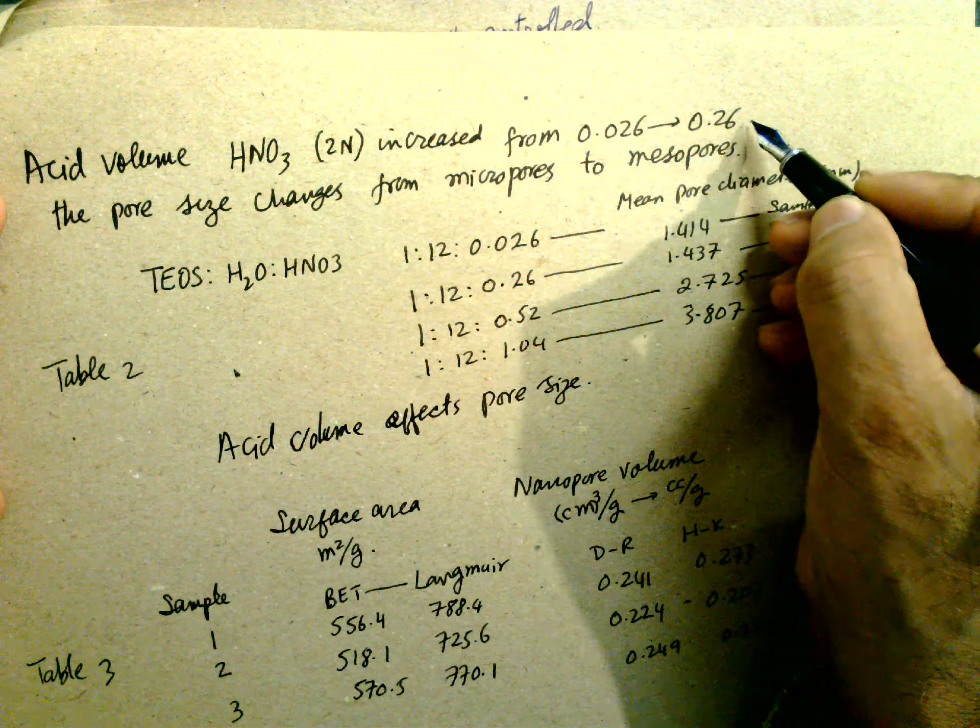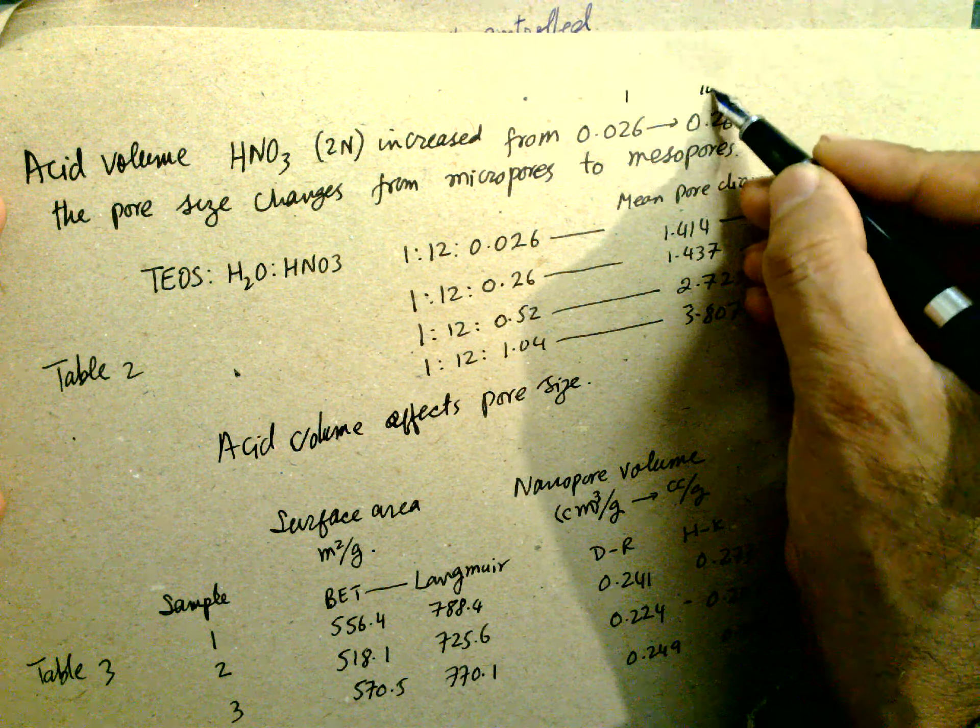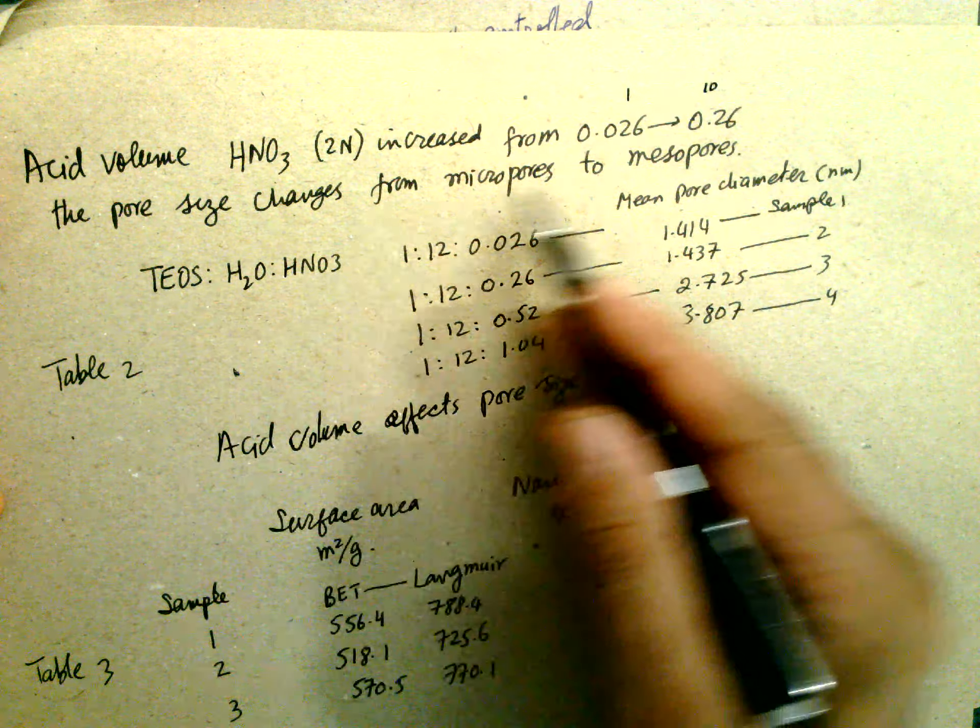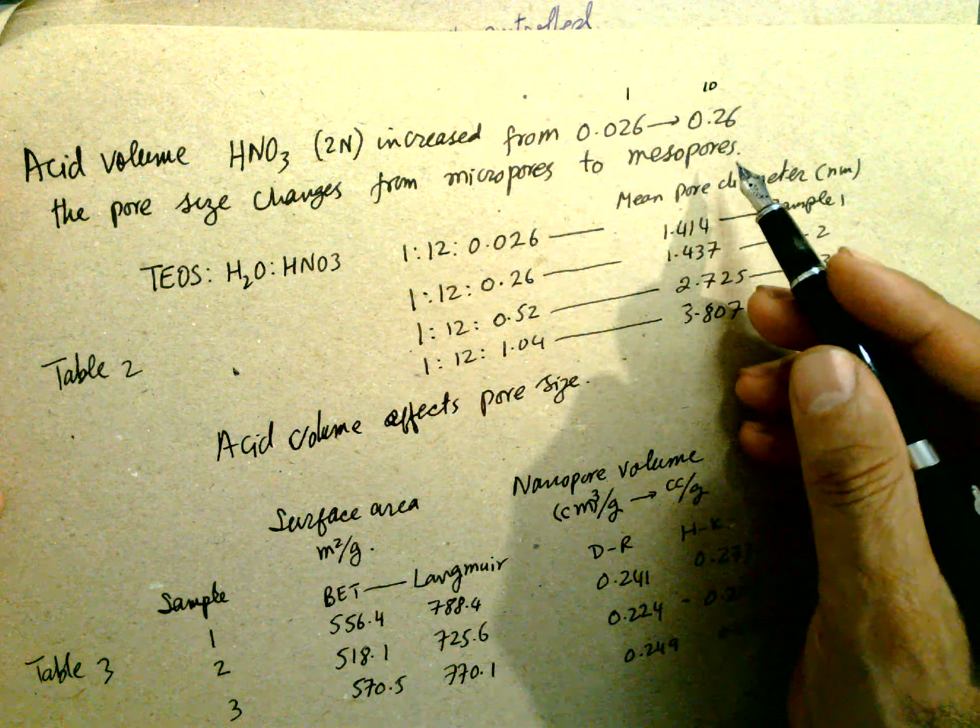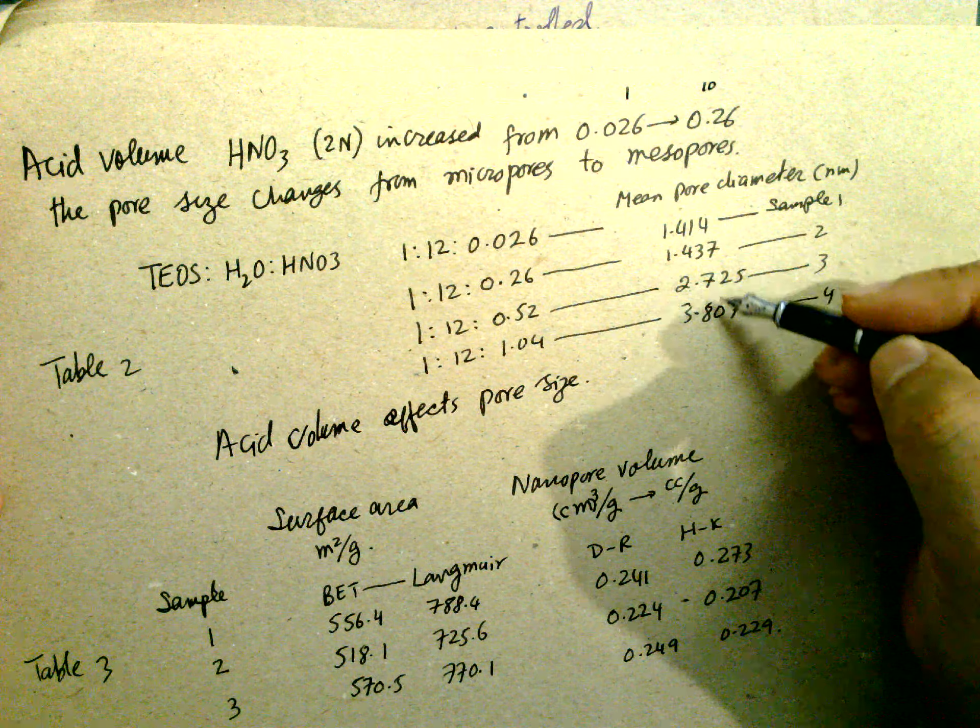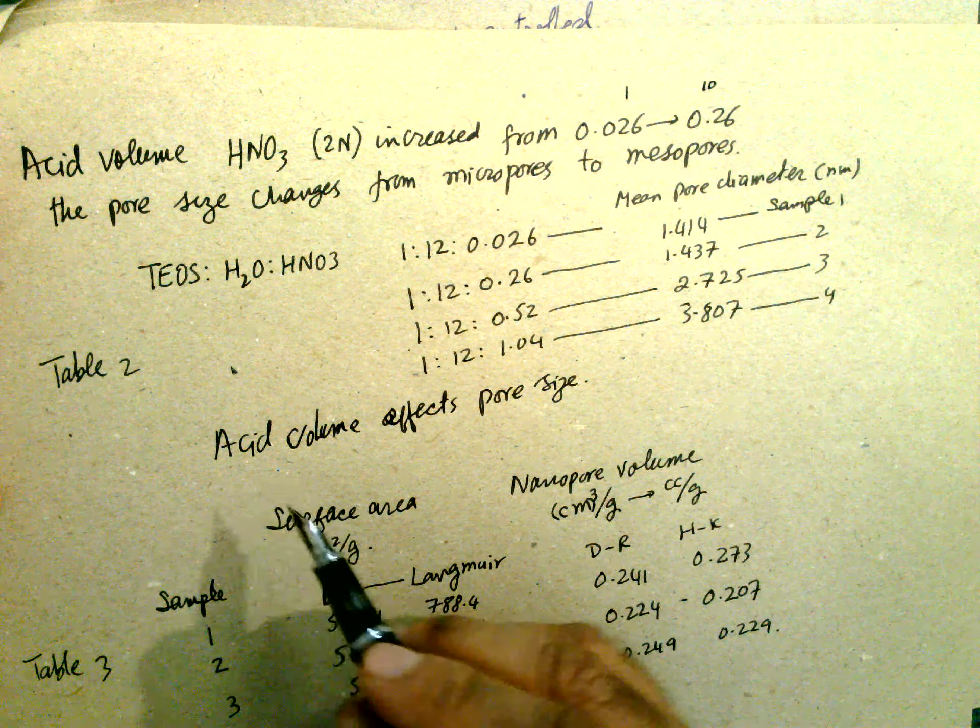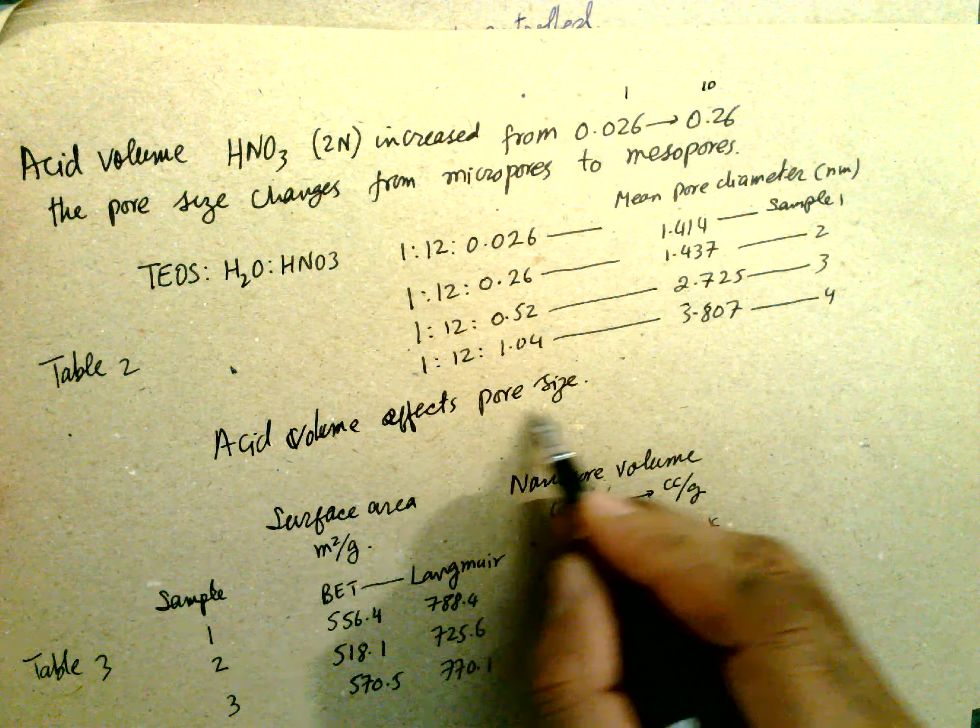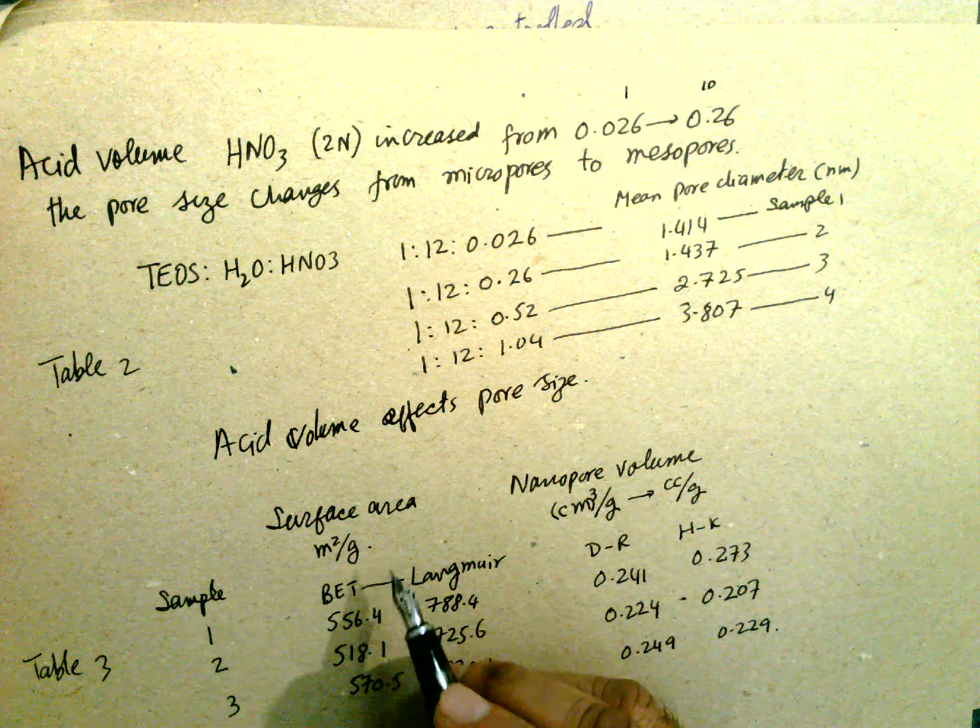Acid volume HNO3 increases from 0.026 to 0.26. This is one, this is 10 times. The pore size changes from micro to meso. This is sample 1, 2, 3, 4, and the pore size increases.